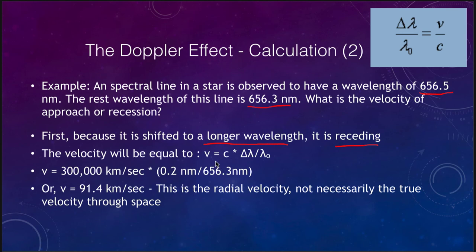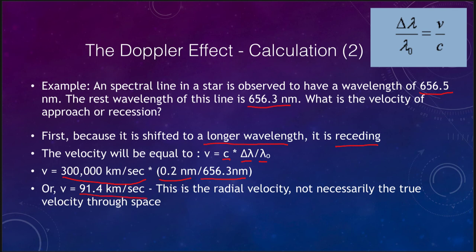We can rearrange the equation to solve for velocity, which equals the speed of light C times the change in wavelength divided by the rest wavelength. C is 300,000 kilometers per second, the change in wavelength is 0.2 nanometers, and the rest wavelength is 656.3 nanometers. Multiplying and dividing, we find a velocity of 91.4 kilometers per second. This is what we call the radial velocity — the portion moving towards or away from us, in this case moving away. That is not the true velocity of the object through space; it is only a portion of it.